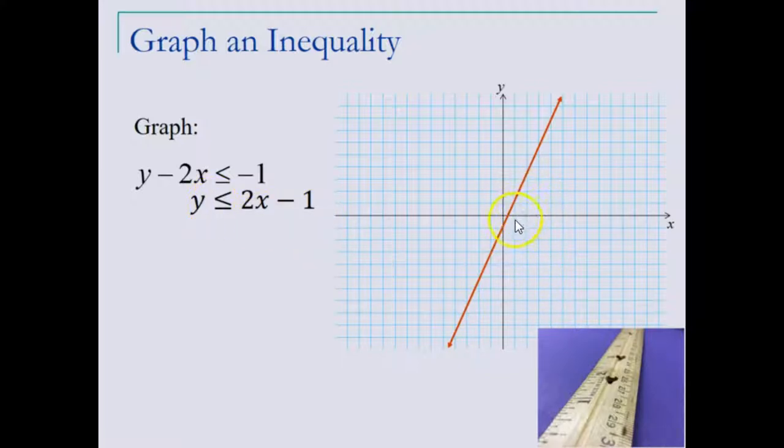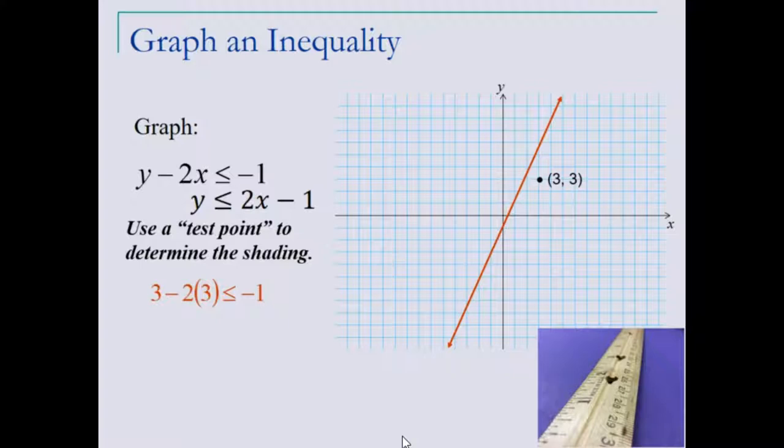So here's our boundary line. The y values are smaller below the line if we look at the y-axis. So we need to pick a test point, and we will pick a test point from this right-hand or lower side of our boundary line, and replace those values in our inequality to see if it does give us a true statement.